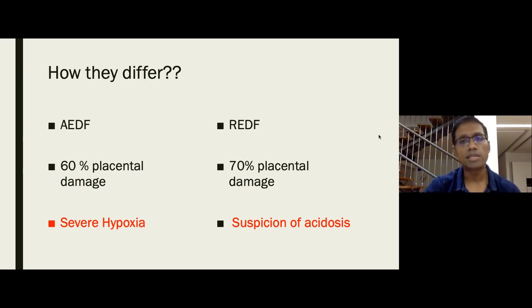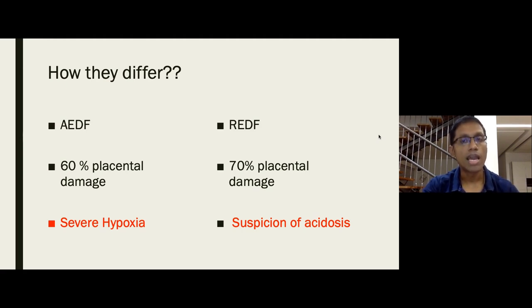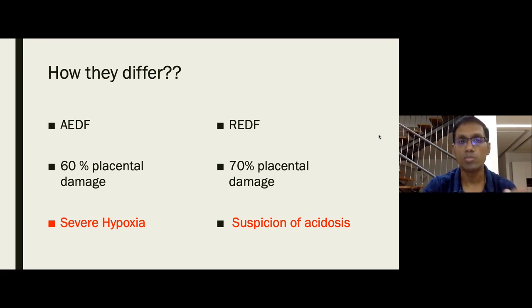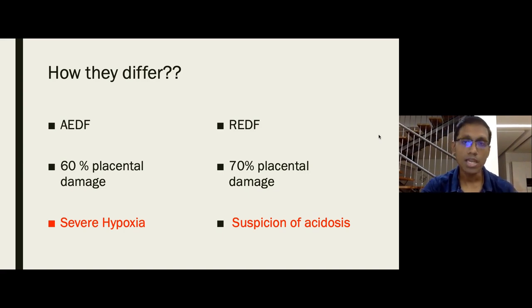Why does differentiating absent from reversed end-diastolic flow matter? Absent end-diastolic flow indicates severe hypoxia, while reversed end-diastolic flow indicates probable acidosis. If there is acidosis, you must deliver before 32 weeks. If there is only hypoxia, you can wait until after 32 weeks. That is why this distinction is clinically critical.